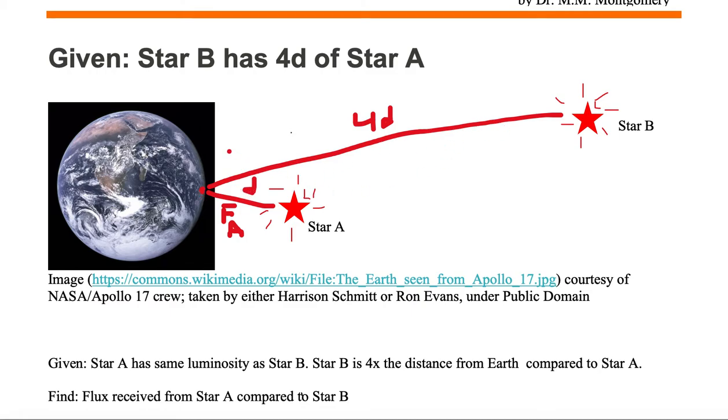We want to find the flux that's received from Star B. Remember, flux is the amount of starlight that leaves the surface of the star but that falls on one square meter on the surface of your object, in this case planet Earth.